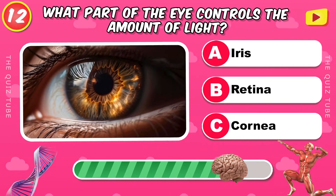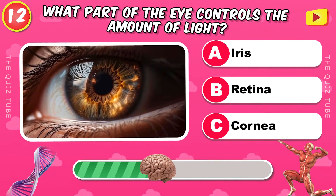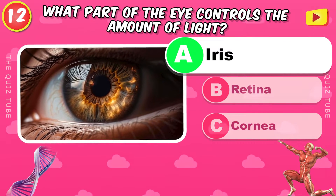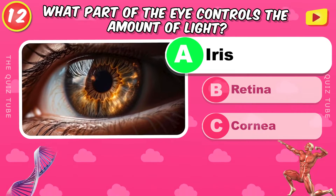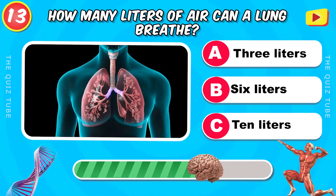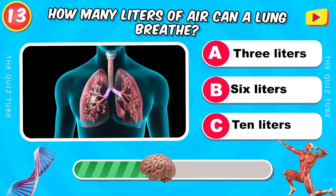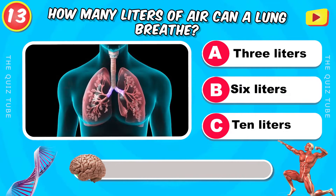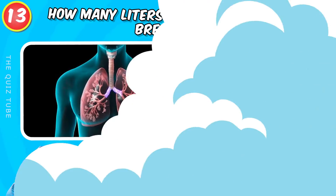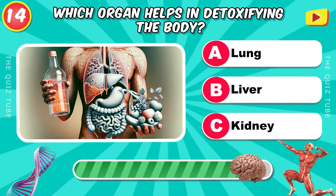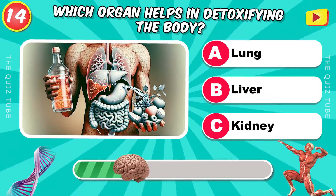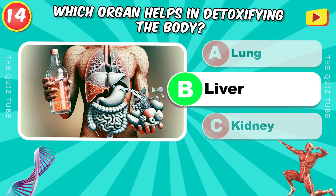What part of the eye controls the amount of light? It's the iris. How many liters of air can a lung hold? 6 liters. Which organ helps in detoxifying the body? The liver.